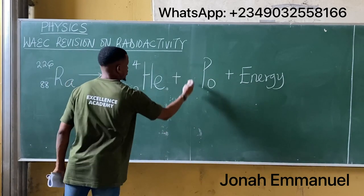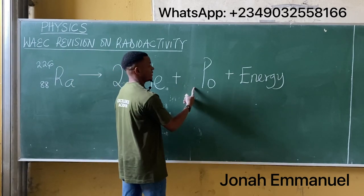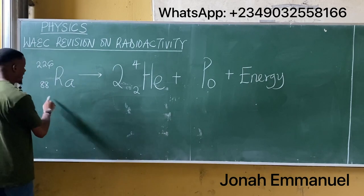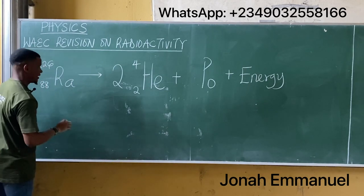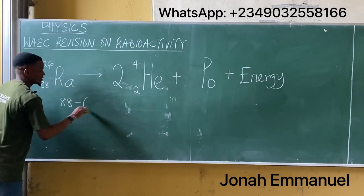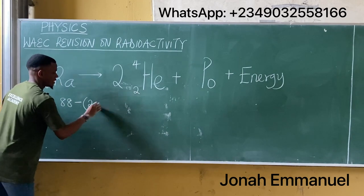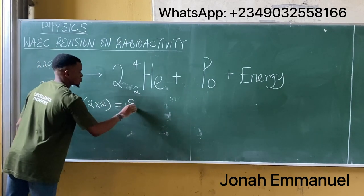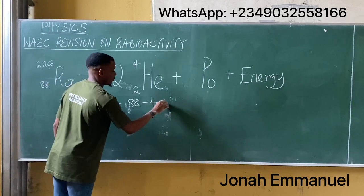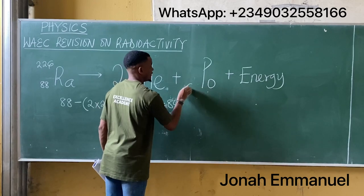For the atomic number: we take 88 and subtract the total atomic number from the two alpha particles. That's 88 minus (2 times 2), which equals 88 minus 4, giving us 84. So polonium will have atomic number 84.